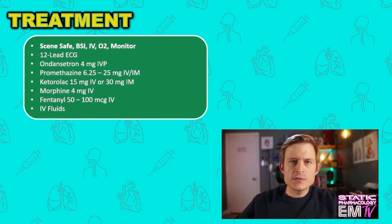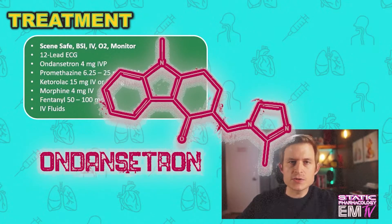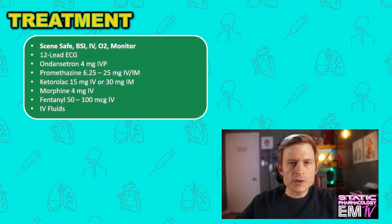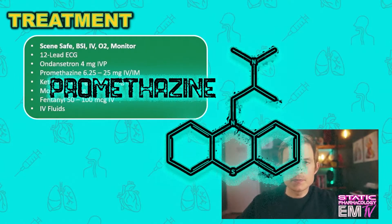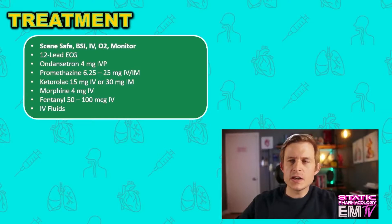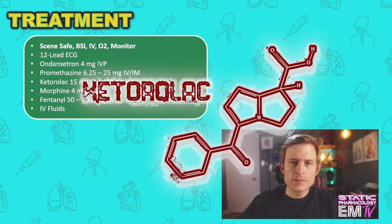As the vast majority of kidney or ureteral stones will pass on their own, our treatment here is going to rely heavily on symptom management. My first medication is Ondansetron, or Zofran, which can be given in doses of 4 mg IV push. If you don't carry Ondansetron or prefer a different antiemetic, promethazine, or Phenergan, is another excellent choice. The dosing is between 6.25 to 25 mg, given either deep IM or IV push. The analgesic of choice for this kind of patient is actually going to be the anti-inflammatory NSAID Ketorolac, better known as Toradol.